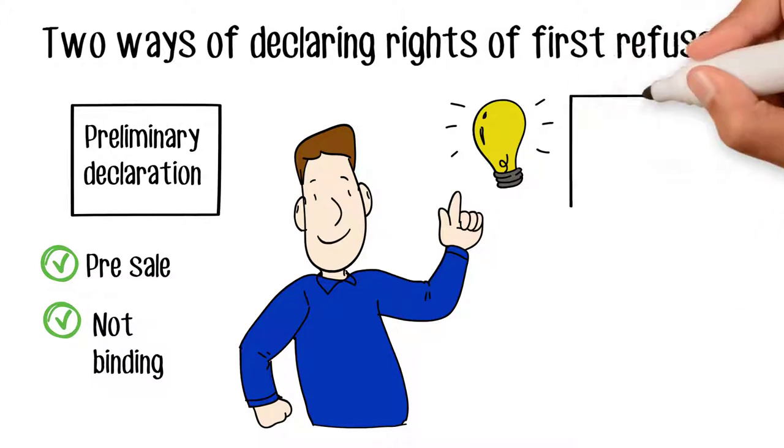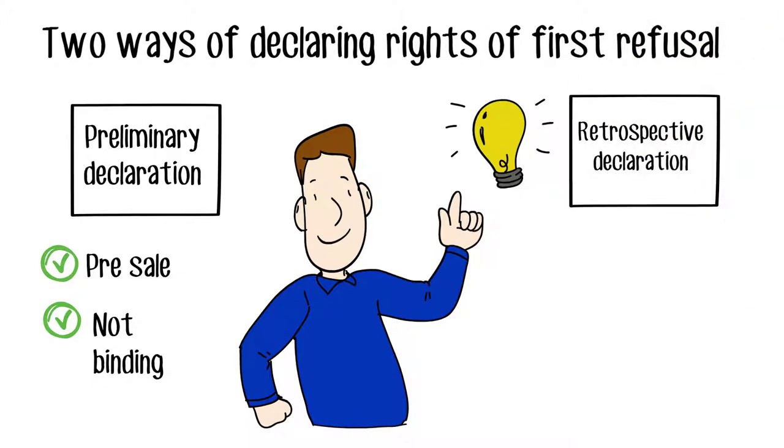The other method is retrospective declaration, when the property is sold and the price has been set. Reporting a right of first refusal on a property like this is binding.